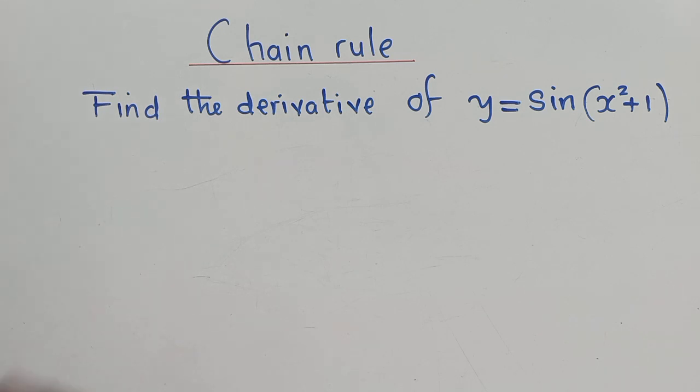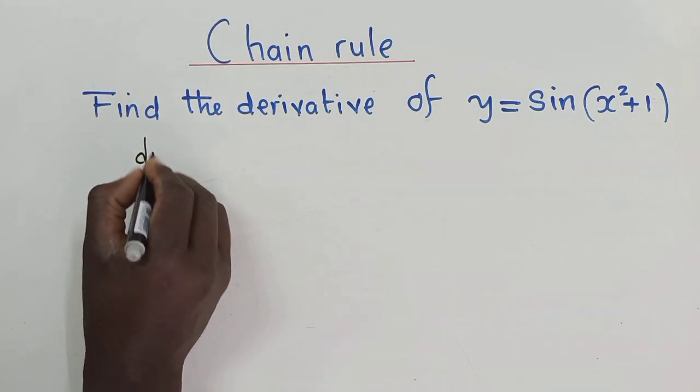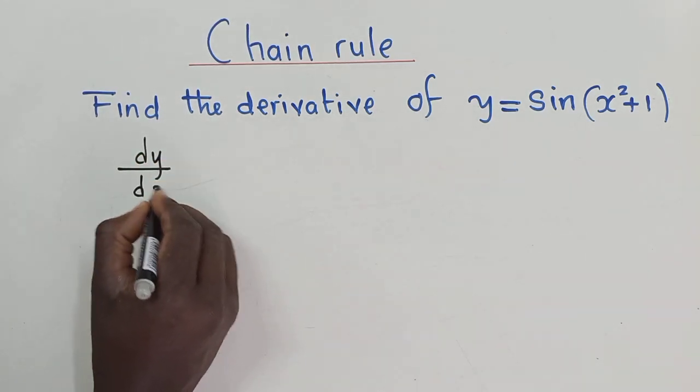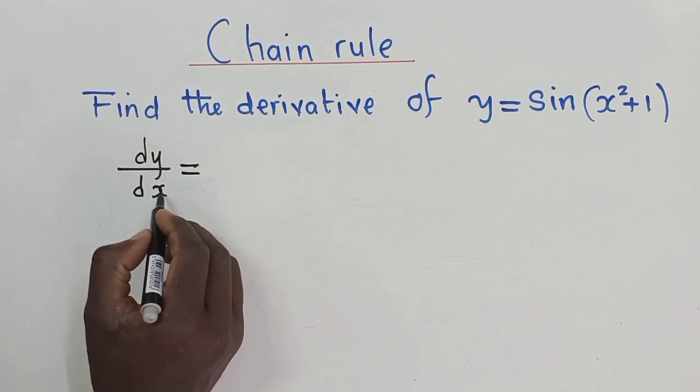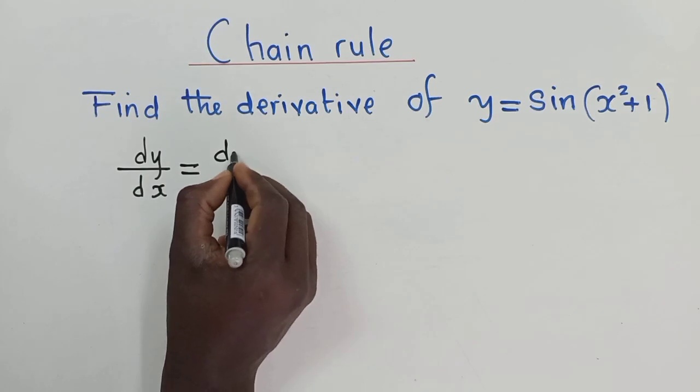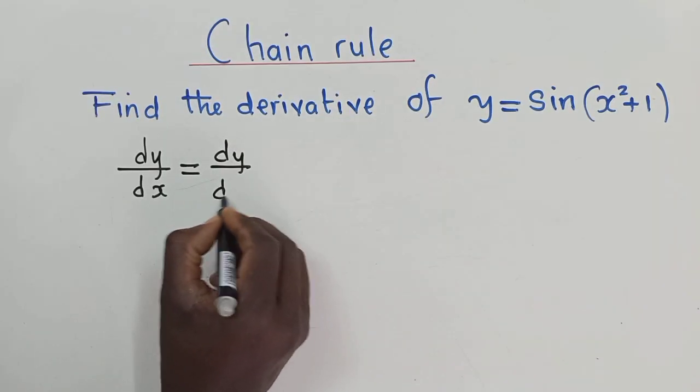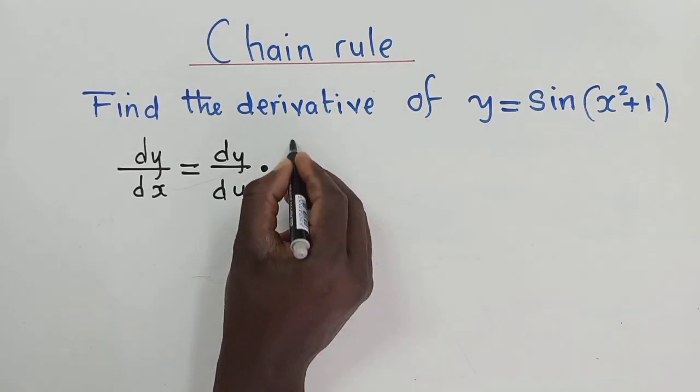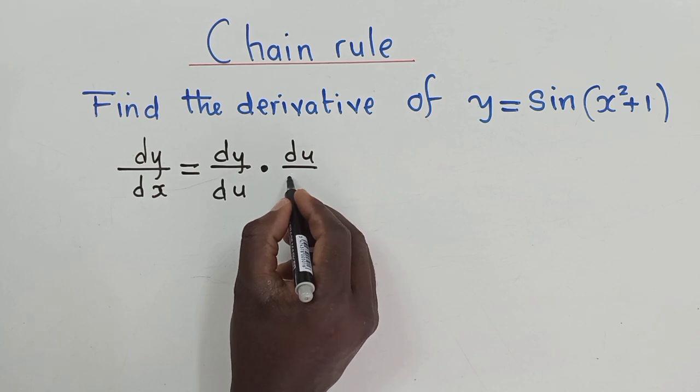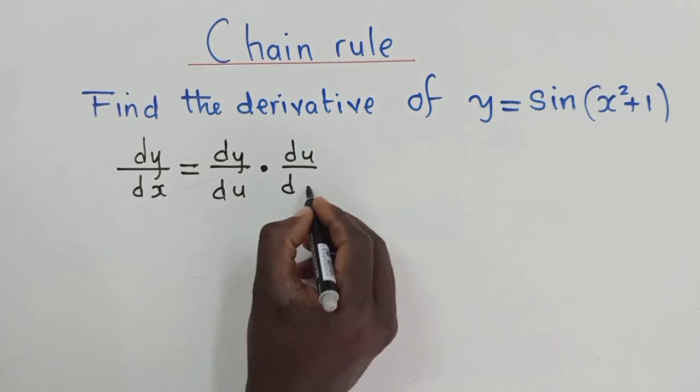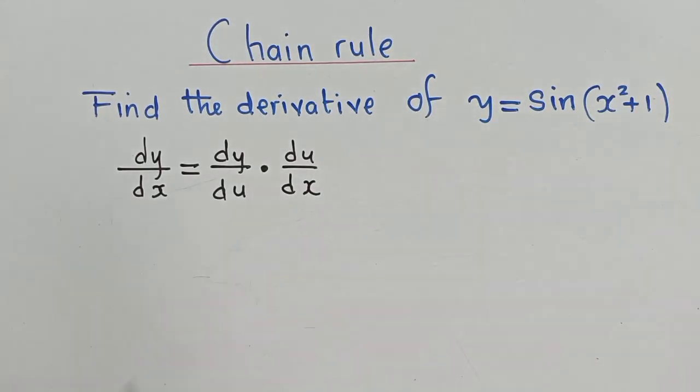So chain rule says that if you want to find the derivative of any function using chain rule with respect to x, you must find the derivative with respect to u and then you multiply it by the derivative of u with respect to x. So this is the formula we're supposed to use.